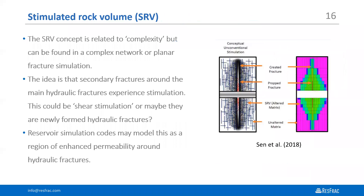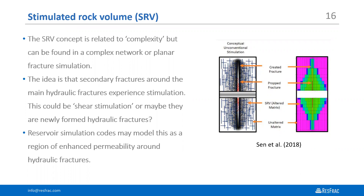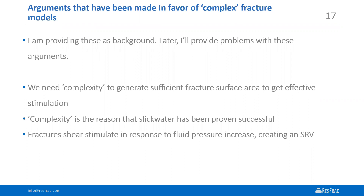There's also the concept of the stimulated rock volume, shown here in a cartoon from a recent paper by Cyn with Anadarko — leak-off creating a halo of enhanced permeability. I want to emphasize that I think this is a hypothesis. I do not think you can just assume this is happening in shale. In my experience, it's surprisingly sparse how much actual field-scale support exists for this concept. The core-through studies are not showing enhancement of permeability around hydraulic fractures that are formed. And in my personal experience, I have not needed to do this to match production data over and over again. Arguments made in favor of complex hydraulic fracture models include: needing complexity to generate sufficient fracture surface area; complexity explains slick water success; and fractures shear stimulate in response to fluid pressure increase, which must create an SRV. I see flaws in all these arguments.